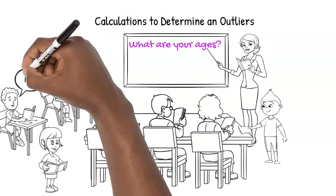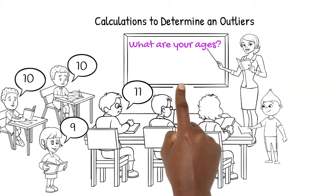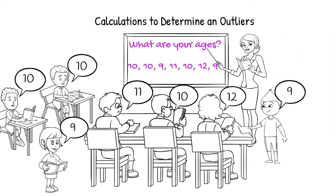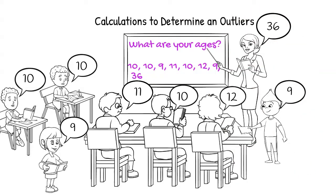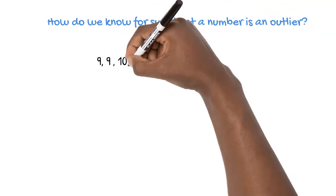You may recall that in a previous video, we looked at the ages of people in a classroom and determined if we add the teacher's age, this is an outlier because the number stands out amongst the other ages. But how can we be sure that this is an outlier?